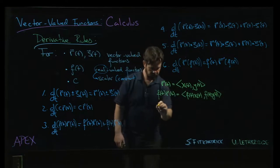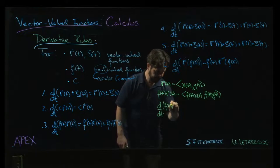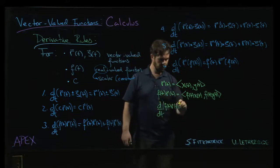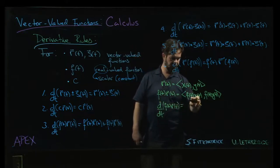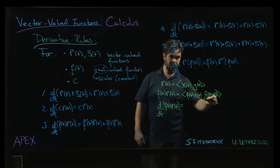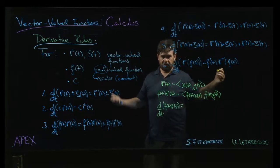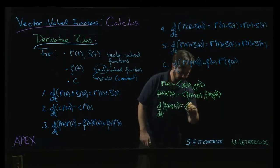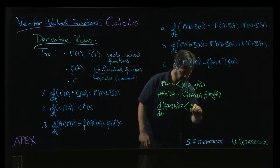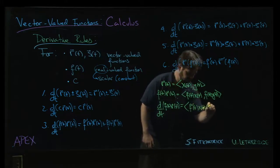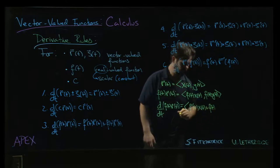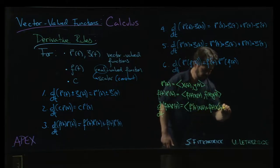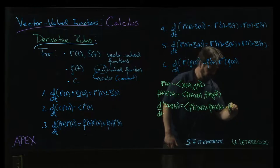And so when you take the derivative of this thing, well, we take the derivative of this and we take the derivative of that, and each of these are just regular products of real valued functions. So it's sort of standard product rule being applied on the inside. So we have f prime of t times x of t plus f of t times x prime. And then we have f prime of t times y prime.